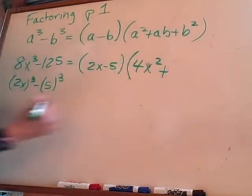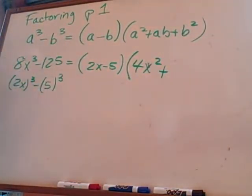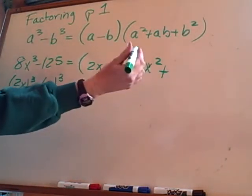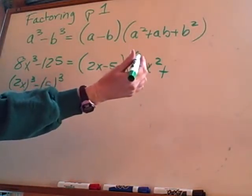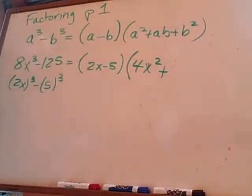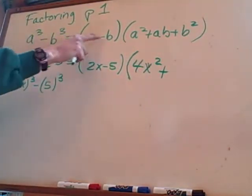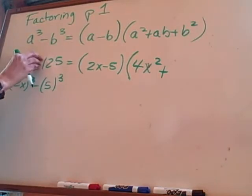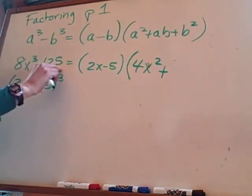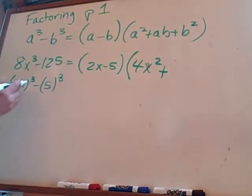4x squared plus what's a times b? What would that be? That'd be minus 10x. But I think it's a plus, it's not a minus. Here's why. This subtraction is taken into account here. Okay, so the b is just 125, it's not a negative 5. Is that making sense?